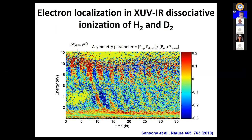The observable we focused on was electron localization. There are several things visible in the experimental result. First, the asymmetry parameter is not necessarily zero — there is a preferential direction, up or down. Moreover, this preferential direction depends on the kinetic energy of the H+, and most interestingly, it depends on the time delay between the attosecond pulse and the few-cycle IR pulse. We see the asymmetry oscillating back and forth as a function of time delay, shifting preference from up to down when we shift the delay by half an optical period.